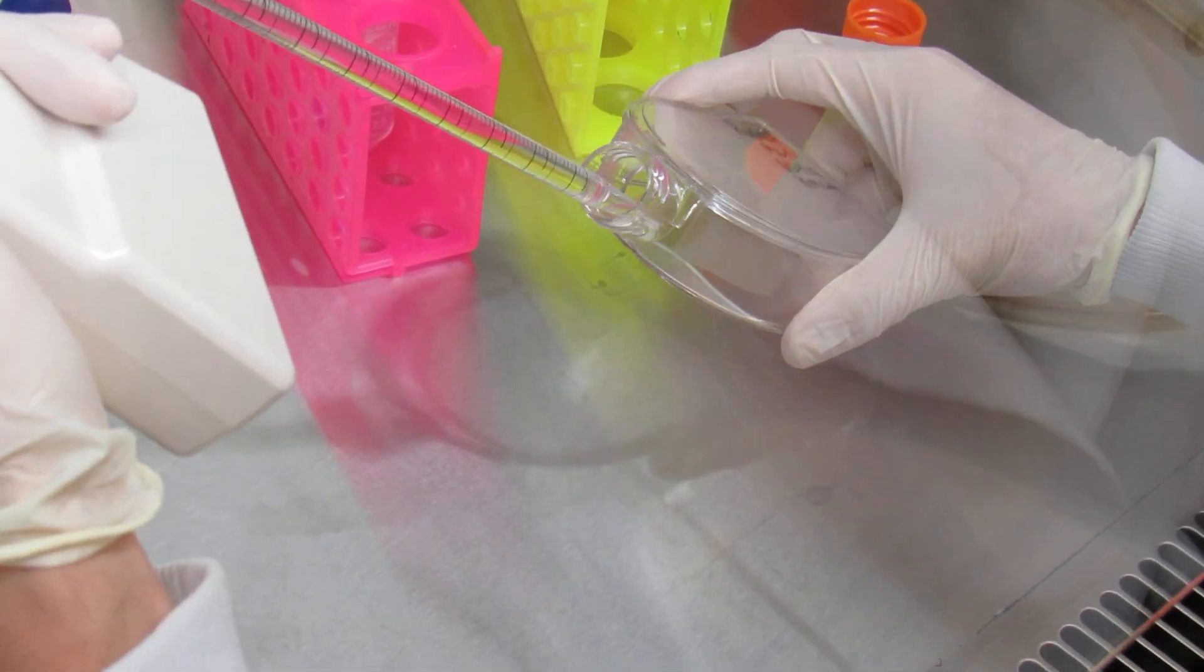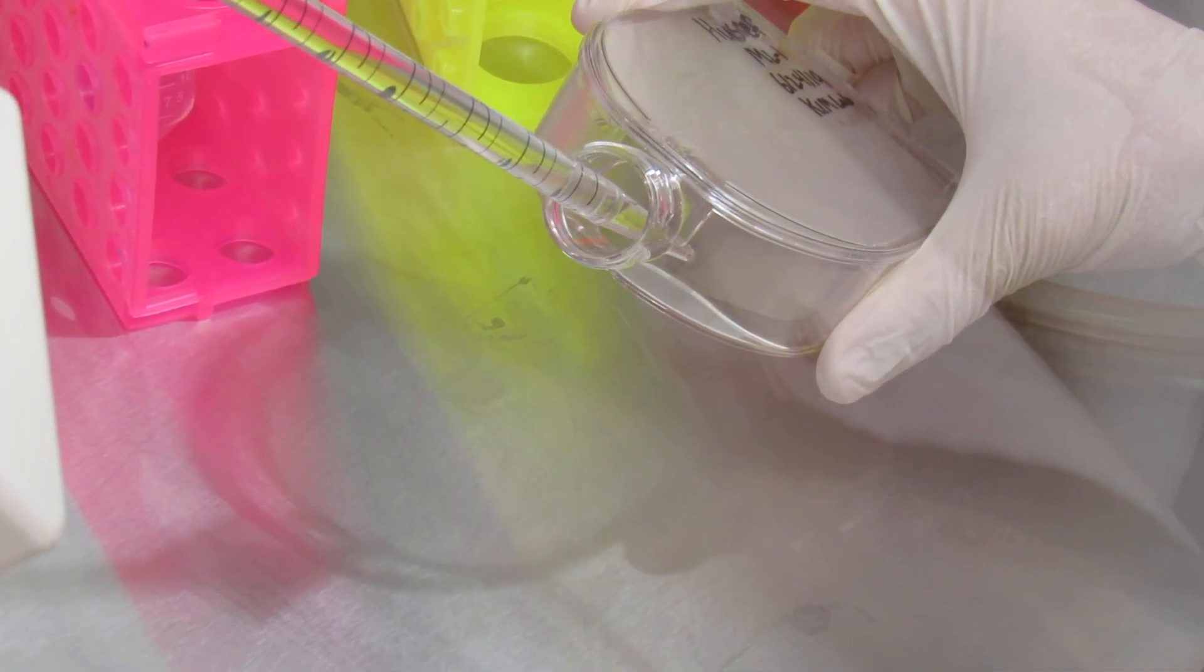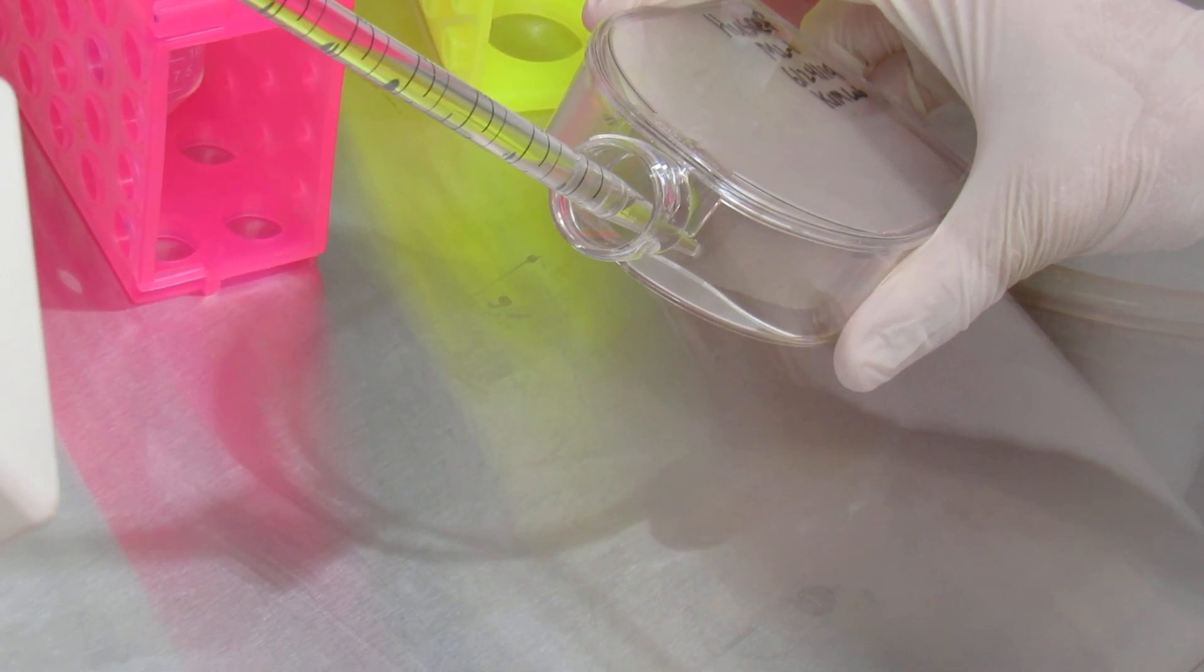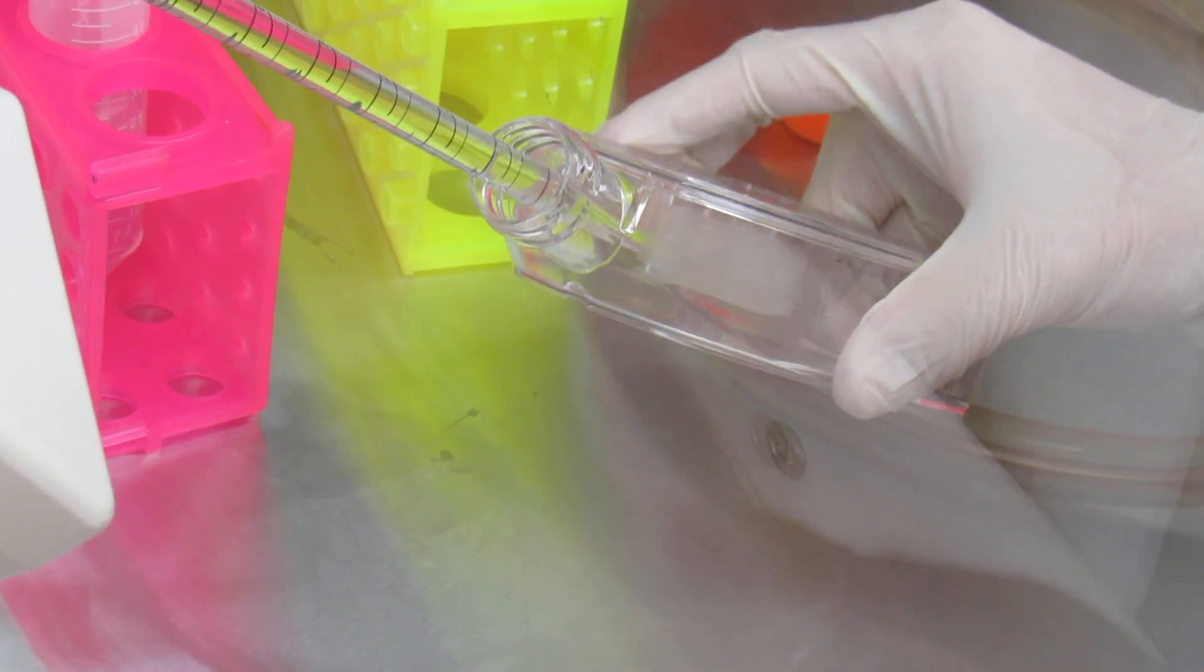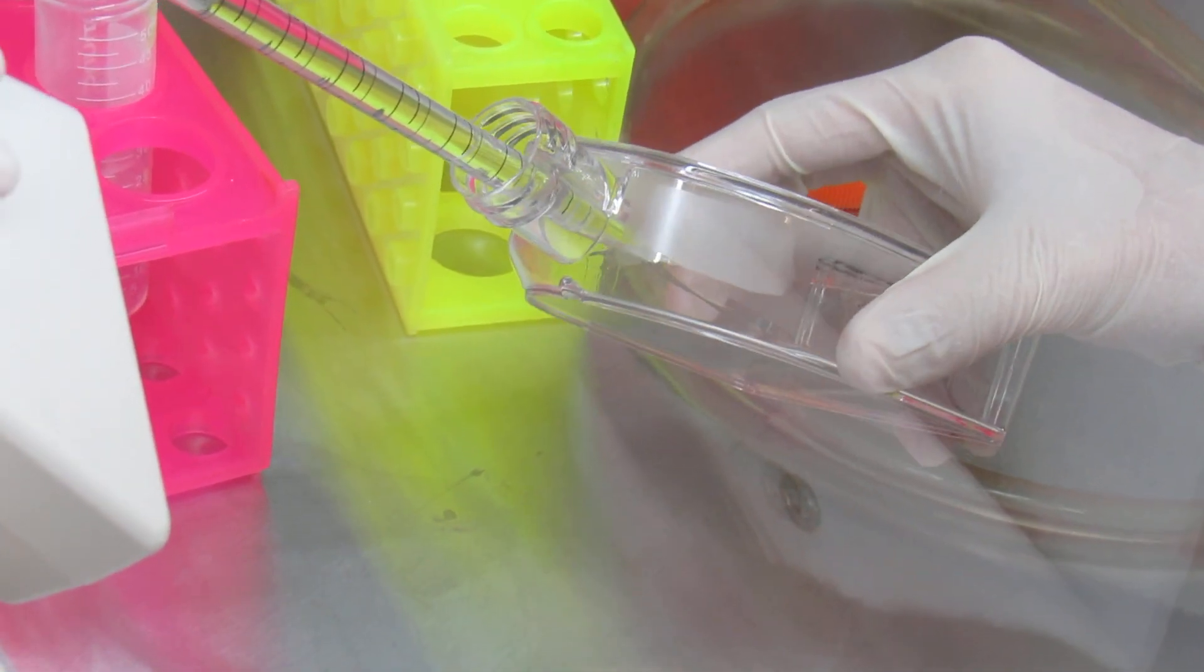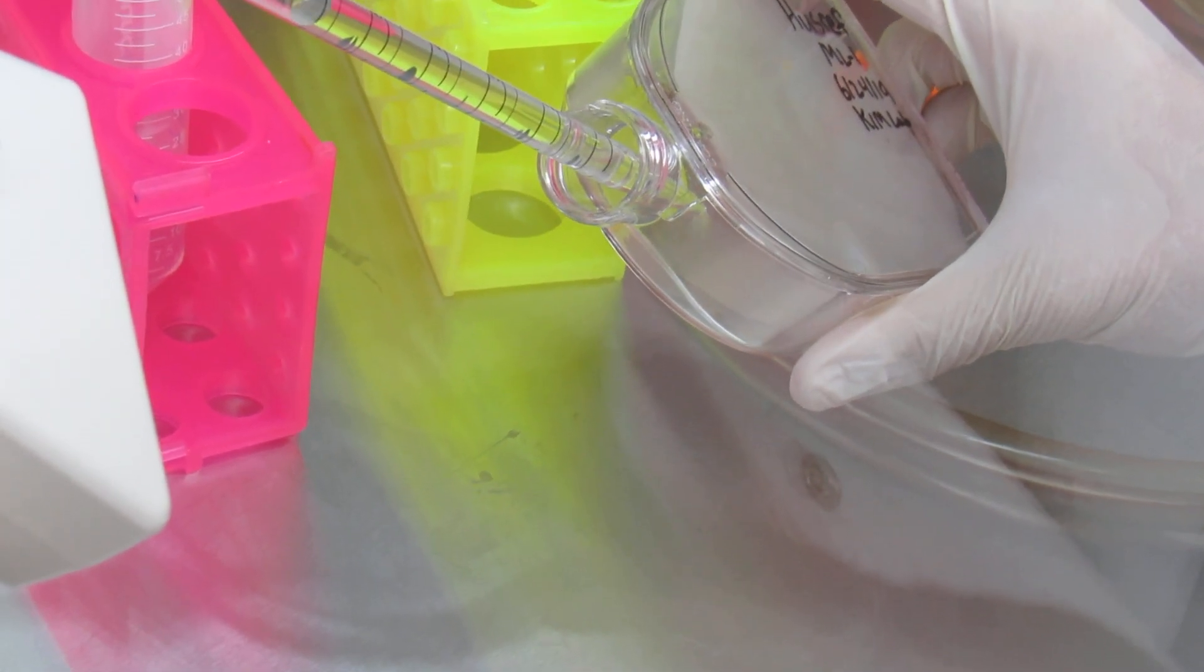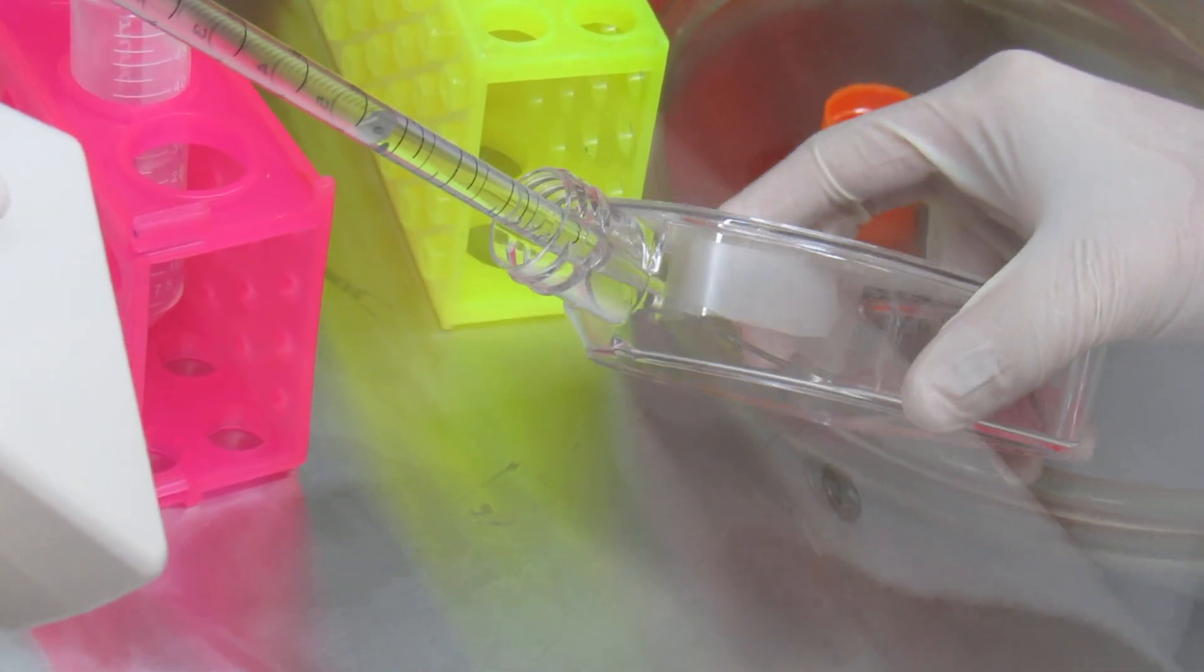Next, you'll add the PBS dropwise to your flask, again being mindful not to scrape the bottom of your flask. It may be a little hard to see, so rotate it so you can see it. And be very mindful whenever you're working with the pipette to never suck up any liquid past the maximum allotted amount, or you will contaminate the pipette as well as ruin the pipette filter.